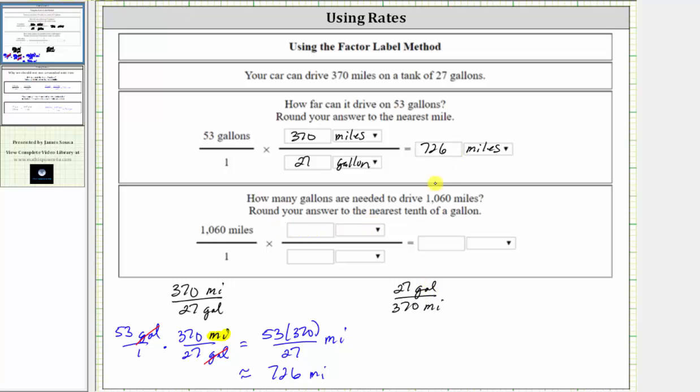So again, we first write 1,060 miles as a fraction with a denominator of one. We multiply by the rate of 27 gallons per 370 miles. And notice the units of miles will simplify out, leaving us with gallons, which will be how much gas is needed to drive 1,060 miles.